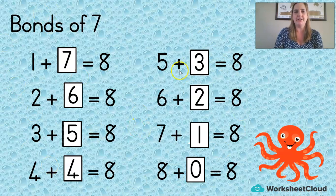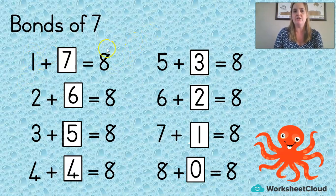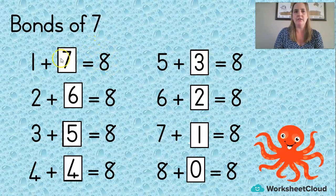And that's what we call bonds of eight or empty box sums. So you might see these. You've got one plus what gets me to eight. Then you just remember, okay, I've got eight in total. Let me see if I've taken one away. How many will I still need?